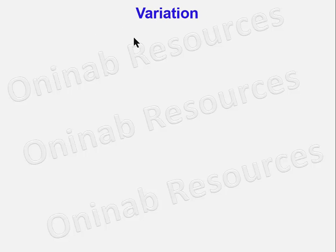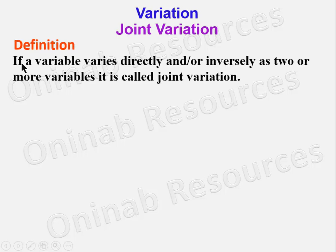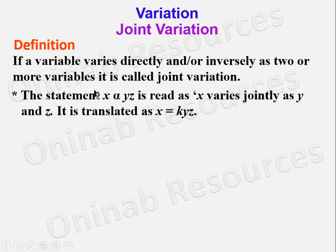Hello, welcome again to this tutorial on variation. In this video we'll be looking at joint variation. The definition: if a variable varies directly and/or inversely as two or more variables, it is called joint variation.